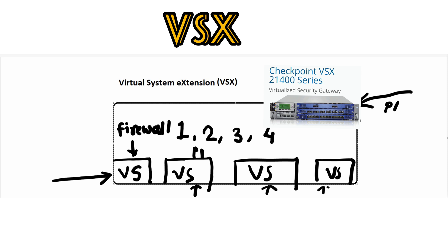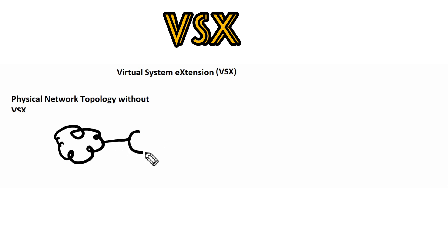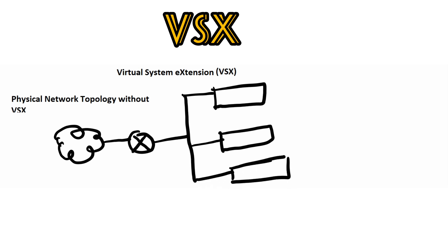Now let's see how a physical network topology without VSX would appear. Consider you have multiple internal networks and those internal networks are protected by different firewalls. The internet connection comes from the cloud, then there is an external router from the service provider, and then you have your firewalls configured. This is a separate firewall, this is another separate firewall, and this is another separate firewall — all protecting their own separate networks: network 1, network 2, and network 3.